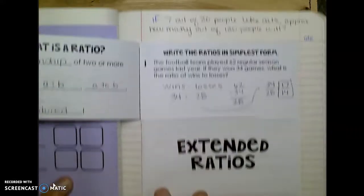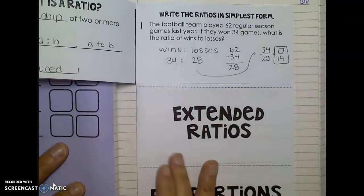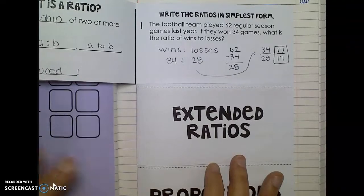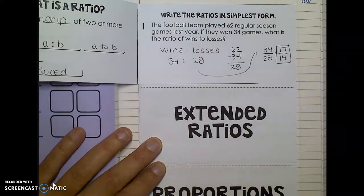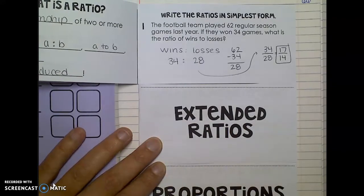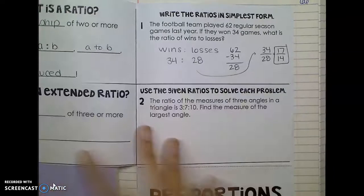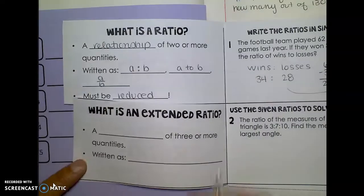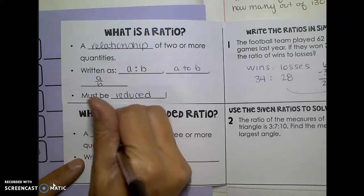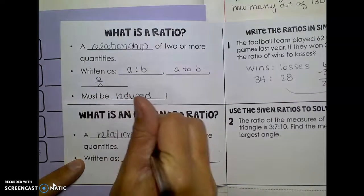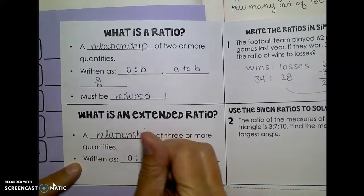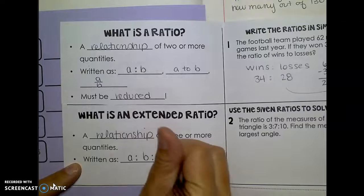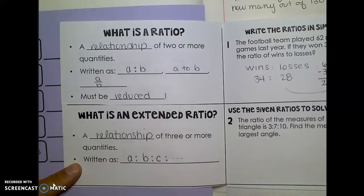We can also have extended ratios, which don't make as much sense to be in fractional form anymore. An extended ratio just has more than two relationships. So an extended ratio is a relationship of three or more quantities. We're always going to write that one as a to b to c, etc. You're never going to really write that in fractional form.